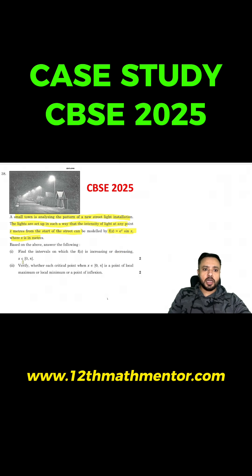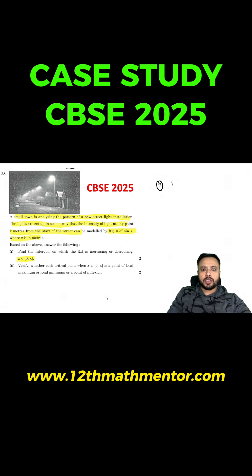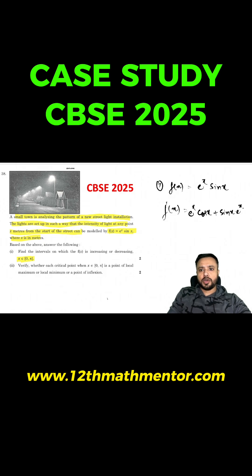For Question 1, x belongs to [0, π] — this limit is very important because our answer should come within this range. f(x) is given as eˣ sin x. To figure out the increasing or decreasing range, we need to differentiate it. Using the product rule, f'(x) = eˣ cos x + sin x · eˣ. Taking eˣ as common, f'(x) = eˣ(cos x + sin x).